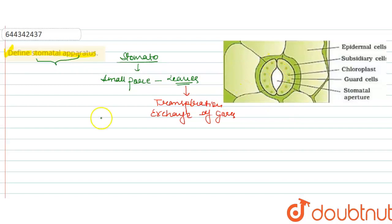Now this is the guard cell and these guard cells are the bean shaped structure. We can say that if you define the stomatal apparatus, so the stomatal apparatus is a pair of guard cells.